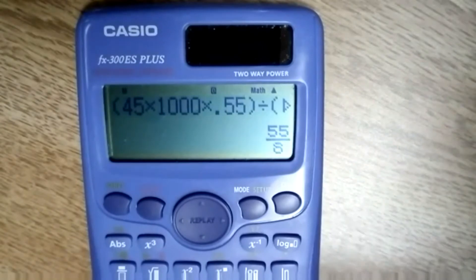Equals. You get that fraction again for the Casio, but hit SD, and now you get your decimal of 6.9 meters.